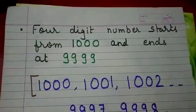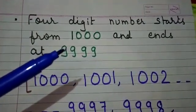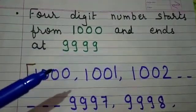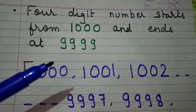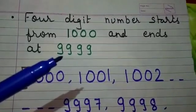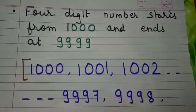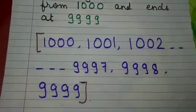Four digit numbers start from 1000 and end at 9999. This means 1000 is the smallest four digit number and 9999 is the largest four digit number.